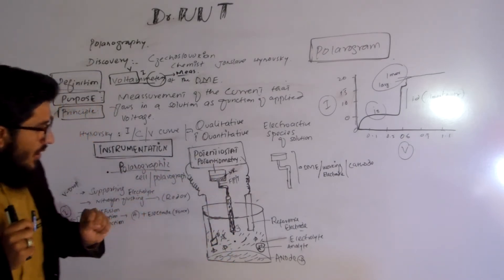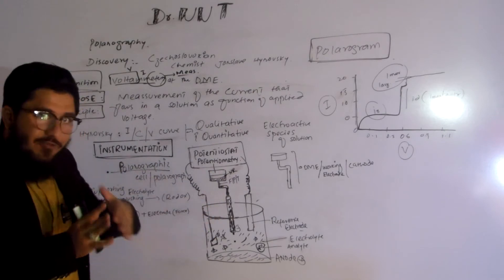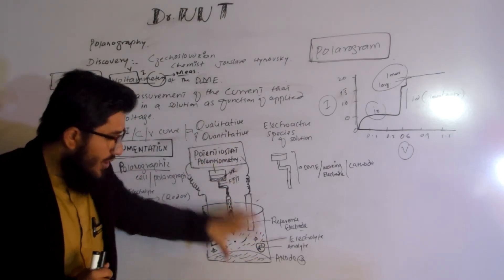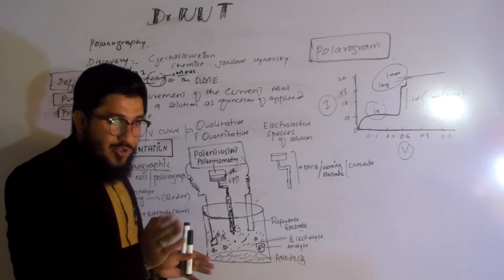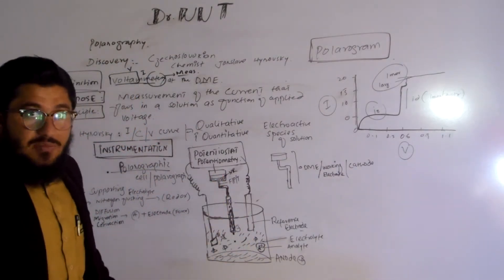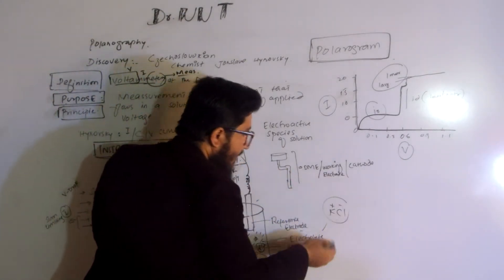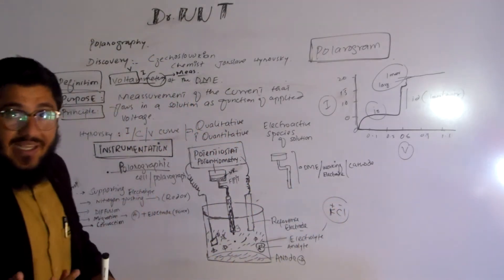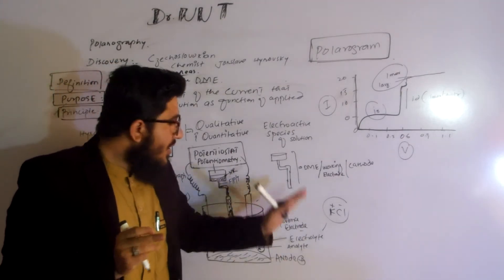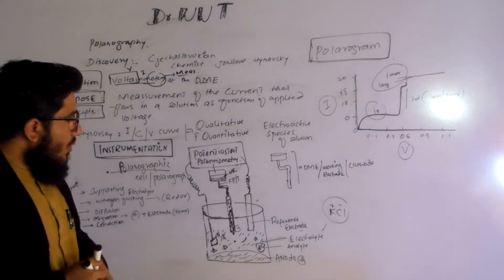As we start the potential by means of the potentiostat, which is responsible for supplying and measuring the potential and current, the analyte present in the solution will split. The analyte is made up of positive and negative ions. The electrolyte used here is potassium chloride — potassium carries a positive charge and chloride carries a negative charge. When electrolysis occurs, potassium and chloride ions are transferred and generate a current.